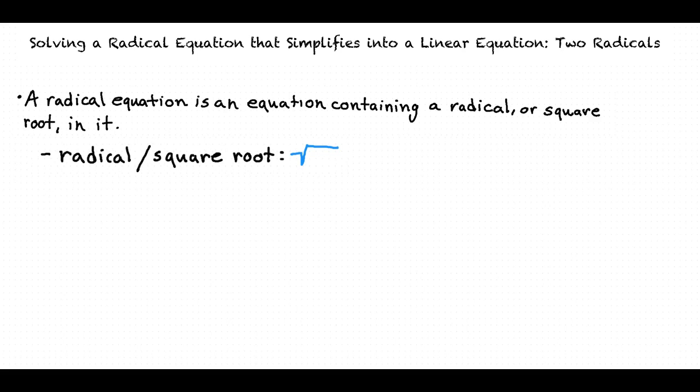Remember that squaring a radical will cancel out the radical sign. So to solve a radical equation, we want to simplify it into a linear equation by squaring both sides of the equation to get rid of the radical sign.